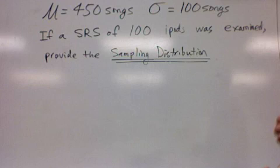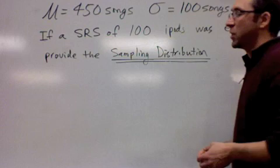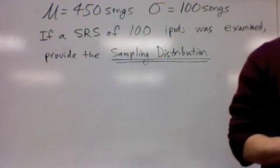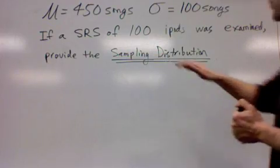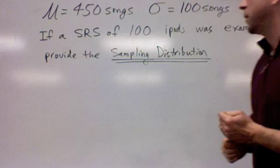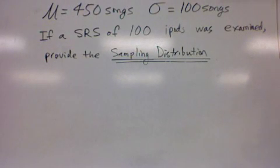Now if we started looking at collections of 100 iPods or a simple random sample of 100 iPods, you would expect that average to be pretty close to 450 songs. It's a healthy size sample, it's greater than 30.